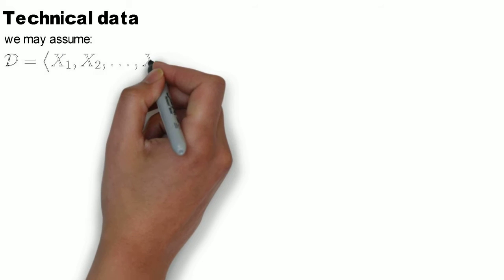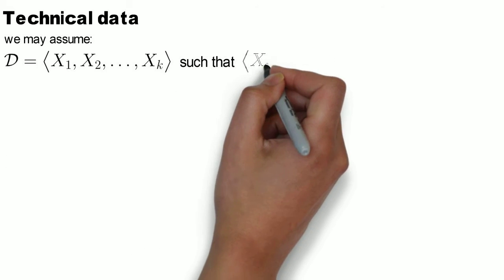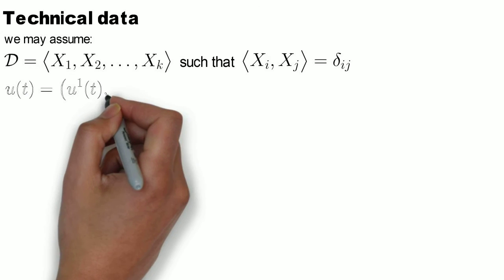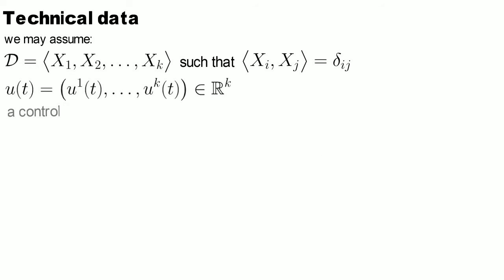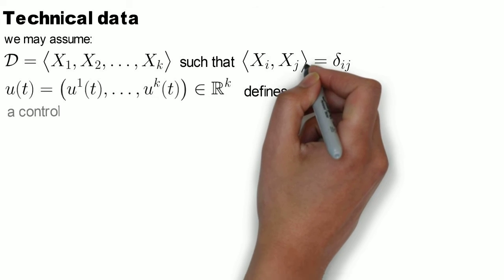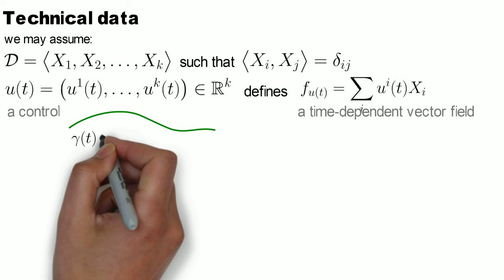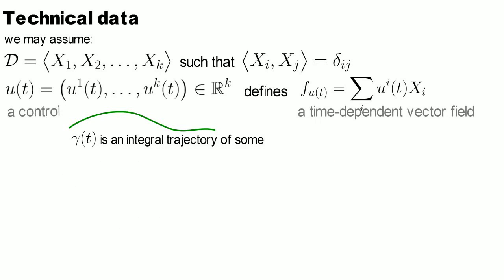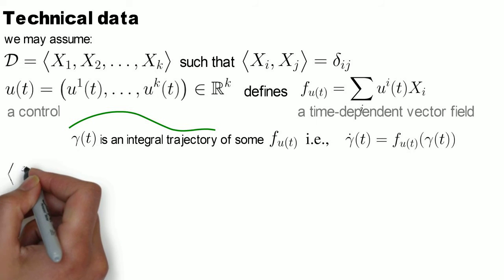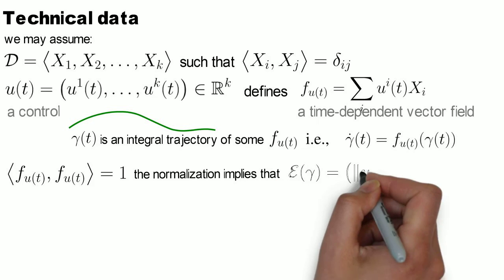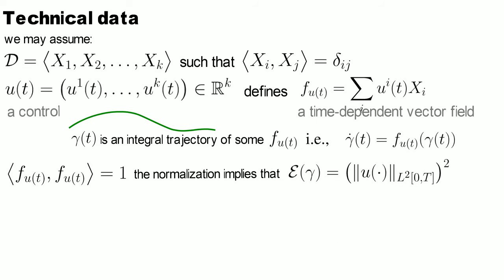To proceed we'll need a few technical details. Without losing any generality we may assume that D is spanned by a family of smooth vector fields being normalized and pairwise orthogonal. A choice of a time dependent function U, called a control, defines a D-valued vector field F of U. Now every curve gamma on Q tangent to D can be realized as an integral trajectory of such a vector field. We may further assume that F is normalized to one. Hence the energy of gamma is simply the square of the L2 norm of U.